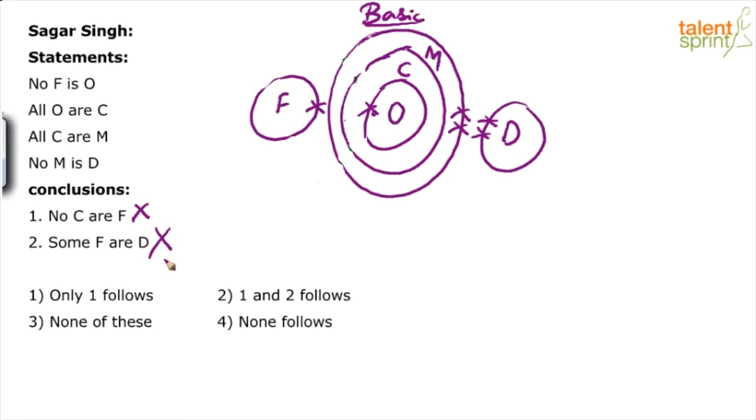Hence, some F are D is wrong. So neither conclusion one nor conclusion two follows. None follows. So your answer should be option four, none follows.